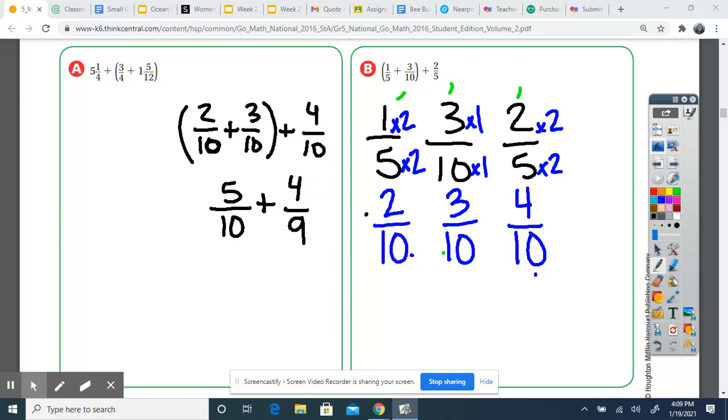And then I can add the four tenths. Five plus—oops, I got ahead of myself. Five plus four is nine. Keep it over ten. So nine tenths would be your answer.